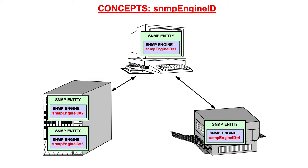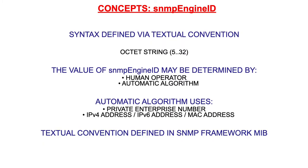Two concepts are really important to understand SNMP: the notion of an SNMP engine ID and that of a context. Every SNMP entity has one SNMP engine, identified by its SNMP engine ID. However, a single system may include multiple SNMP entities. Within a managed domain, the SNMP engine ID must be unique. The syntax is defined by a textual convention as part of the SNMP framework MIB — there is no SMI basic type for the SNMP engine ID. The textual convention says the SNMP engine ID must be an octet string with a size between 5 and 32 octets.